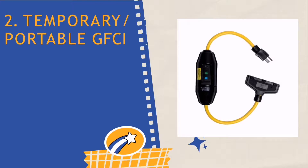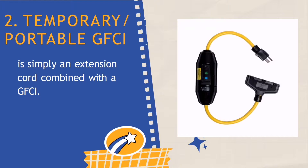Number 2: Temporary or Portable GFCI. When a permanent GFCI is not practical, a temporary GFCI is used. Temporary GFCI contains the GFCI circuitry in an enclosure with plug prongs at the back and receptacle plugs in front. It can be plugged into an unprotected outlet, and then the electrical appliance or device is plugged into the temporary GFCI. Portable GFCI is simply an extension cord combined with a GFCI. It adds flexibility in using receptacles that are not protected by GFCI. Extension cords with GFCI protection are great for use when a permanent or portable GFCI is unavailable.